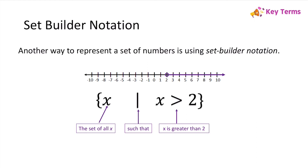If we look at this number line where x is greater than 2, we write this in set builder notation by saying x — which specifies what we're talking about — and then we write this line for "such that." What comes after the "such that" is the description of the x's we're talking about. So in this case, we say: x such that x is greater than 2.